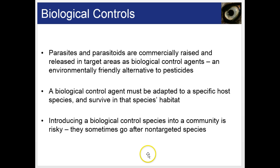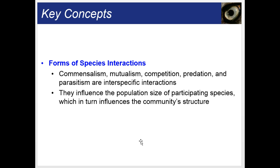Summing up the forms of species interactions: commensalism, mutualism, competition, predation, and parasitism are all interspecific interactions. They influence the population size of participating species, which in turn influences the community structure.